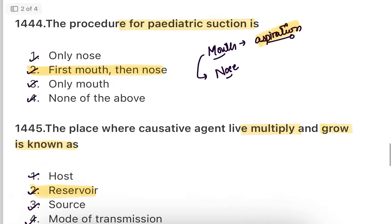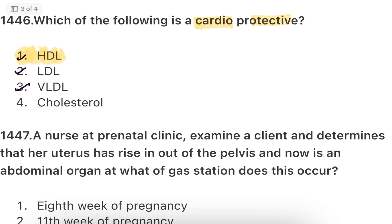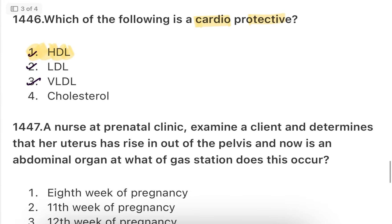Next question: Which of the following is cardioprotective? Options: high density lipoproteins, low density lipoproteins, or VLDL cholesterol. Obviously, high density lipoproteins (HDL) are the good cholesterol — cardioprotective. Low density lipoproteins (LDL) are unhealthy and found in packed foods containing palm oils, whereas HDL comes from healthy sources like almonds and desi ghee.